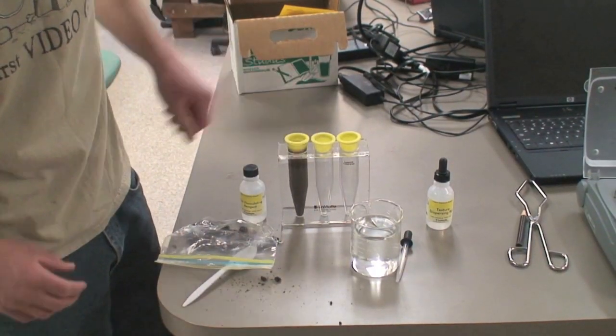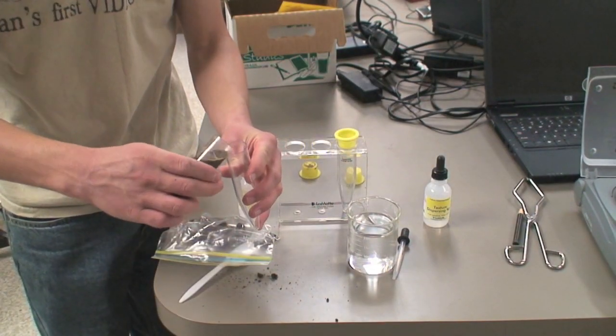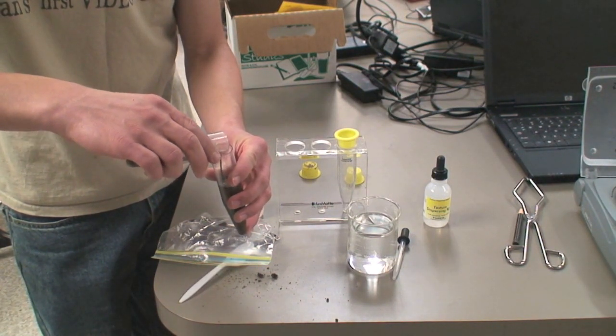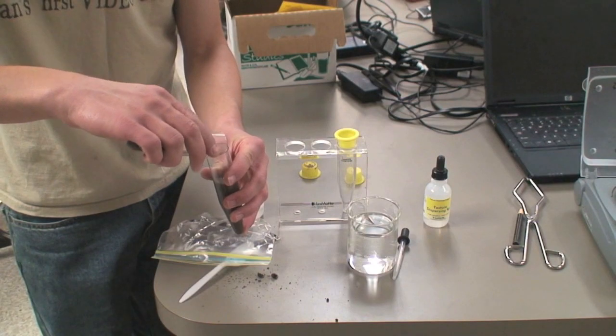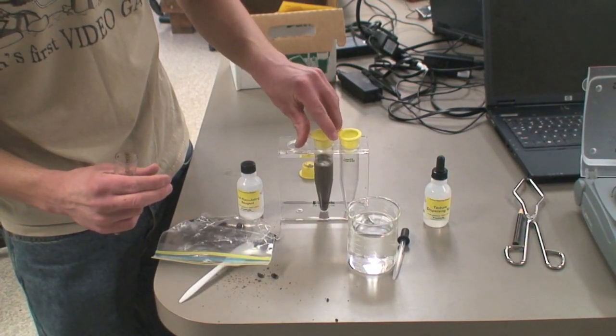Put the tube into the rack and let it sit for 30 seconds. Now pour the solution from the first tube into another tube. Put them both into the rack and let them sit for a half hour.